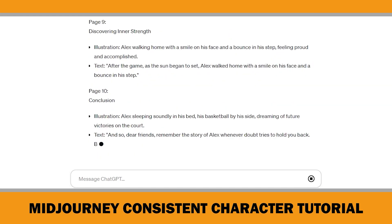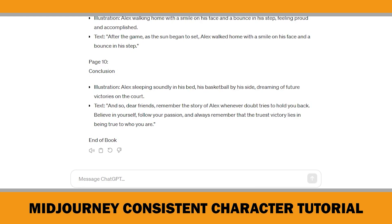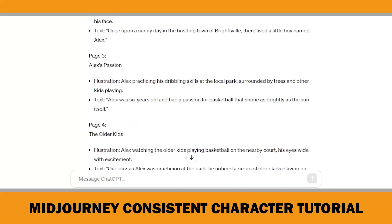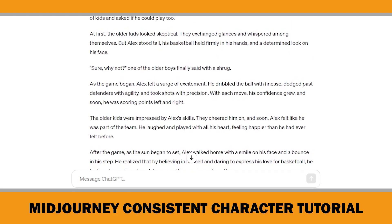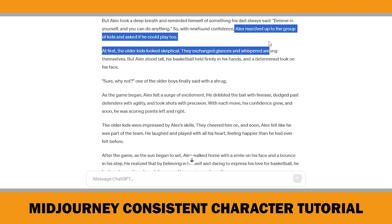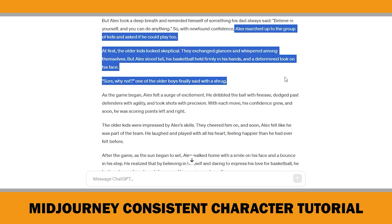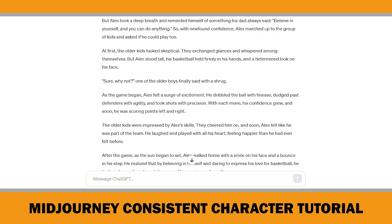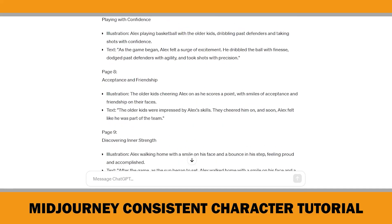You can read and rewrite some parts if necessary. For instance, in this story there's a conversation between Alex, the main character, and some older boys. It says: Alex marched up to the group of kids and asked if he could play too. And one of the older boys finally said with a shrug. Interestingly, this part isn't included in the outline, possibly because I limited the number of pages to 10. However, you can either indicate this to ChatGPT and ask it to add the missing part, or personally fill in the gaps while creating the images in Midjourney.